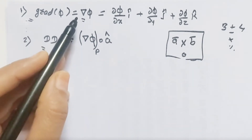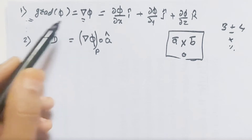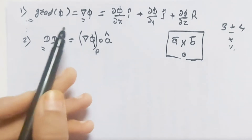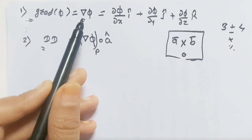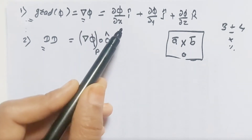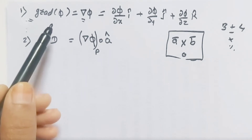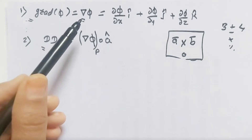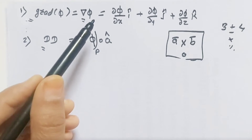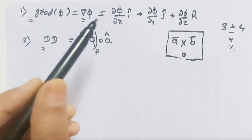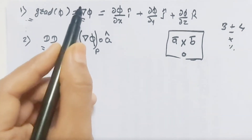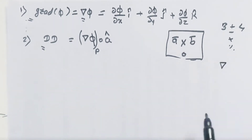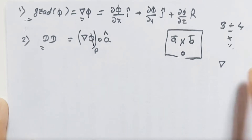Delta is a vector differential operator. If we operate it on any scalar function — if we have a scalar quantity and want to convert it to a vector — we operate the delta operator on the scalar function and we get a vector quantity. So that is the gradient of phi. For gradient, our function must be a scalar point function. If phi is a scalar point function, then delta operates on it and we get delta phi — no dot, no cross.